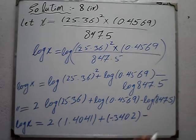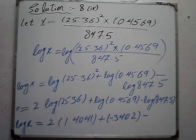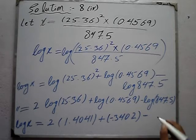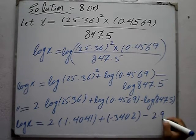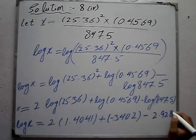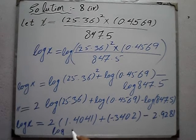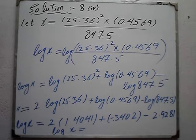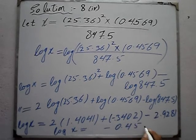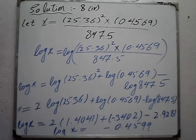Minus, or either way, log of 847.5 will be 2.9281, and minus 2.9281. When all of us have minus, this will change and subtract. The log of x will result in minus 0.4599.